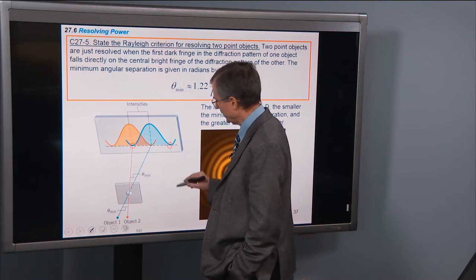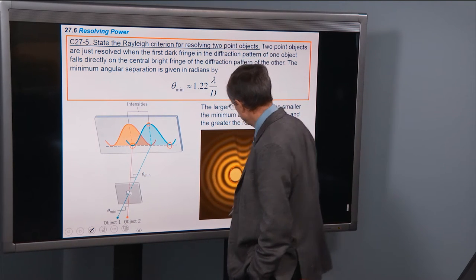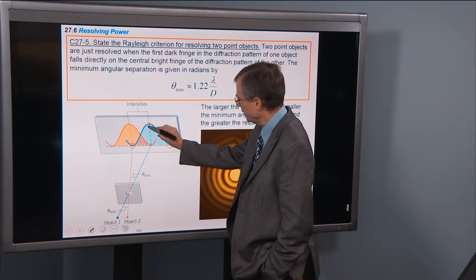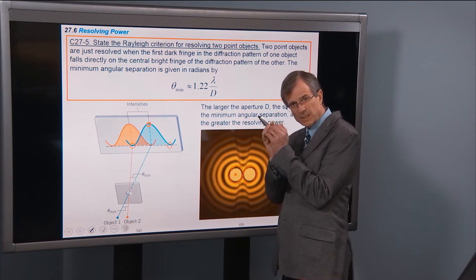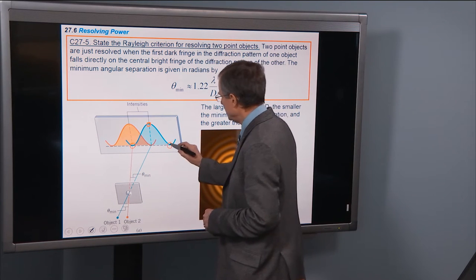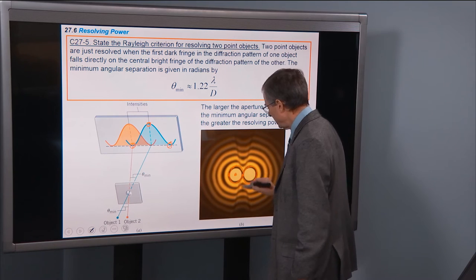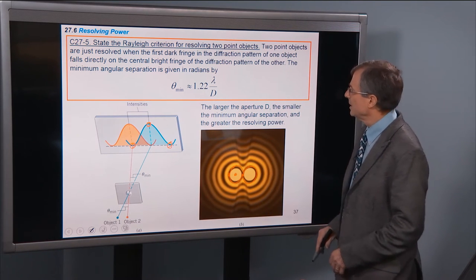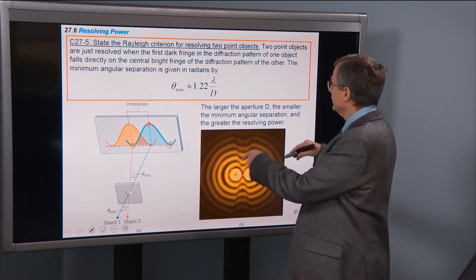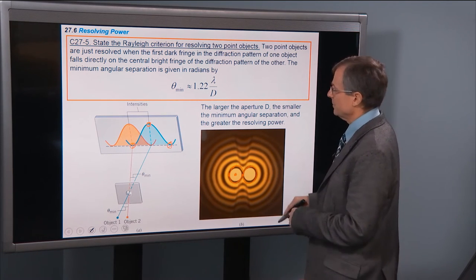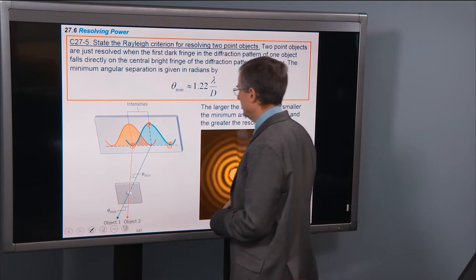This is the dark fringe of the blue pattern. The dark here, dark here. It's a minimum. There's not much light there. This is the center. So this point here corresponds to the center of this bright central spot. And these two points here correspond to the first dark fringe. And they're just resolved, and the first dark fringe in the diffraction pattern of one object falls directly on the central bright fringe and the diffraction pattern of the other.